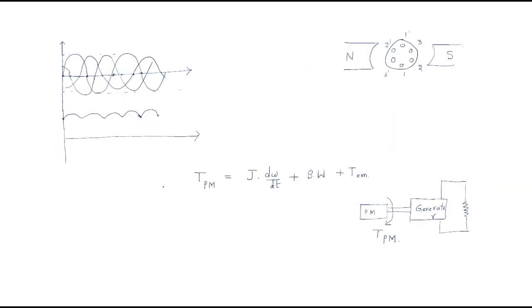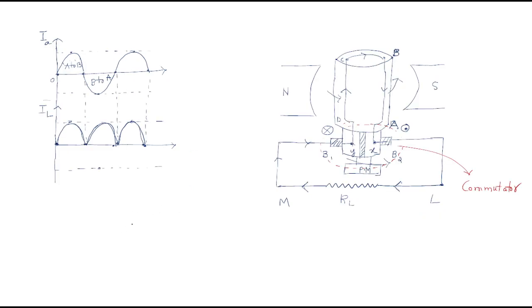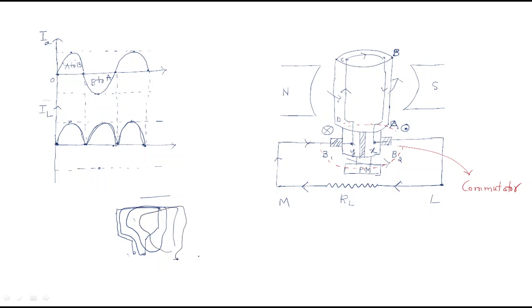In the last session we discussed about only a single conductor. A single conductor means it looks like just a single conductor. If the number of conductors increases, then this bunch of conductors — if the number of conductors increases, we can name it as a bunch of conductors. The collection of conductors is nothing but our armature.